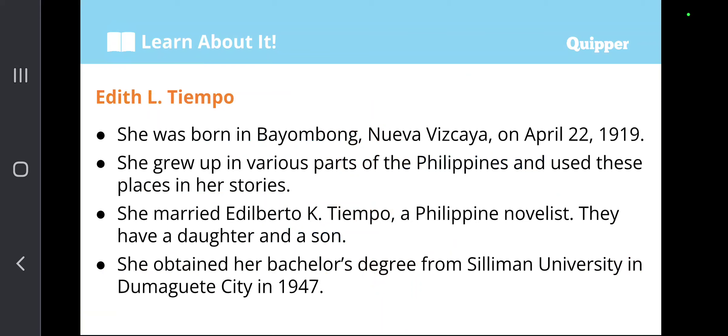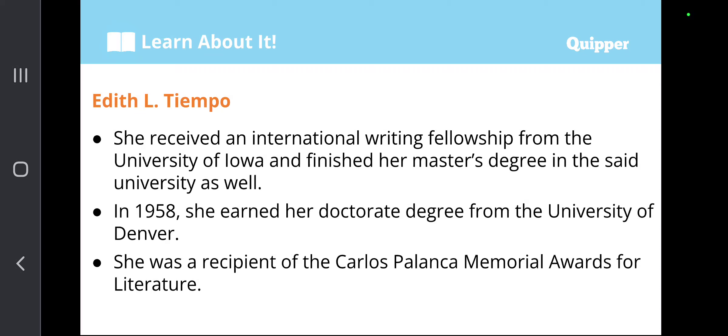She grew up in various parts of the Philippines and used these places in her stories. She married Edilberto K. Tiempo, a Philippine novelist, and they have a daughter and a son. She obtained her bachelor's degree from Silliman University in Dumaguete City in 1947. She received an international writing fellowship from the University of Iowa and finished her master's degree at the said university as well.